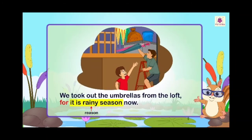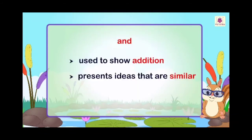For example: 'We took out the umbrellas from the loft, for it is rainy season now.' Here 'for' is used as 'because.' Why did we take out the umbrella? Because it is rainy season now. Next, 'and' is used to show addition.